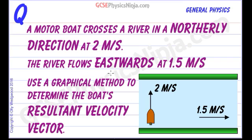Now the river is flowing eastwards at 1.5 meters per second. So that's going to make the boat drift to the right as the boat makes its crossing. Use a graphical method to determine the boat's resultant velocity vector.